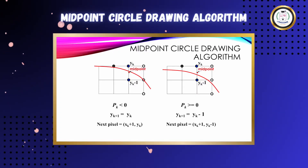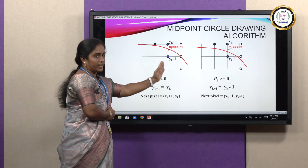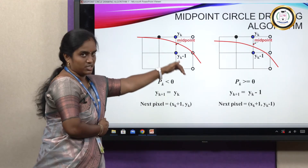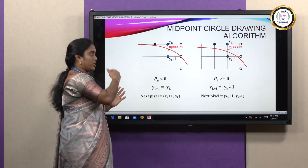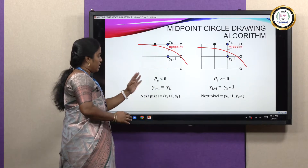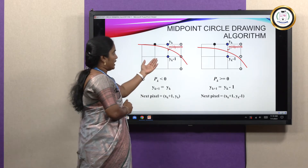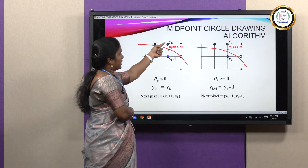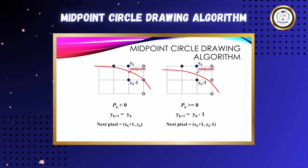Taking an example where the current point is (xk, yk), there are two possible next pixel candidates. The x coordinate is always incremented because the circle path moves in that direction. So in both cases, the next x is xk + 1. For the y coordinate there are two possibilities: it can be either yk or yk − 1. So the two possible next pixels are (xk+1, yk) and (xk+1, yk−1).